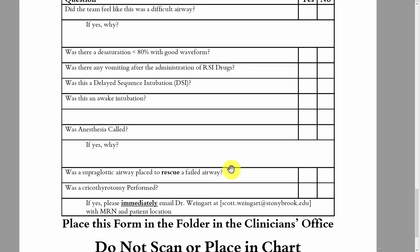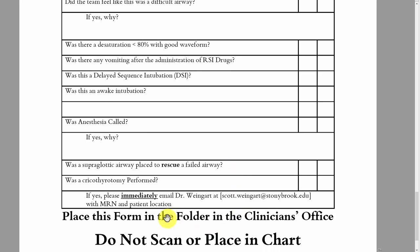Was a cricothyrotomy performed? If it was, email me immediately — as soon as the cric is secured and everything has calmed down, email me in real time. If I'm around, I will come in, intubate the patient from above via fiber optic laryngoscopy, and we'll be able to remove the cric so they don't have to go upstairs with it. If I don't respond or can't come in, just send them upstairs or do whatever you would have normally done. After finishing this form, don't place it in the patient's chart — it goes into a folder in the clinician's office for QA collection. There will be no punitive actions; it's purely to make us better.